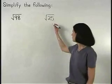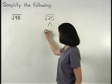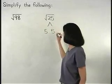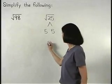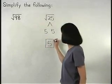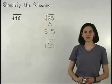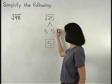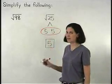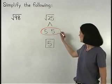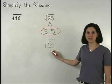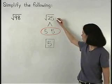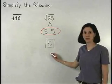Since 25 factors as 5 times 5, the square root of 25 is 5. In other words, since we have a pair of factors that are the same, one of these factors, in this case 5, can come out of the radical. So the square root of 25 is 5.